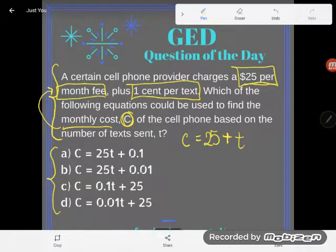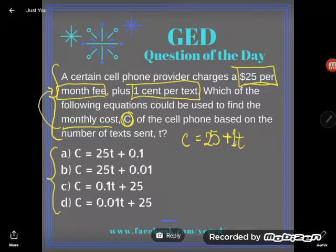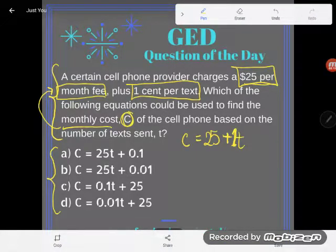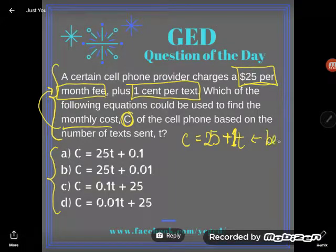Now, students do something really interesting here. They put a one right here for me all the time. They say, oh, look, it's one cent per text. I'll put one times T. And they're so proud of themselves. But I want you to be careful. Here's my warning. Be careful.